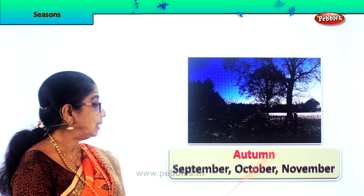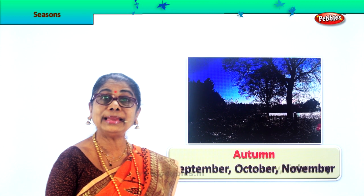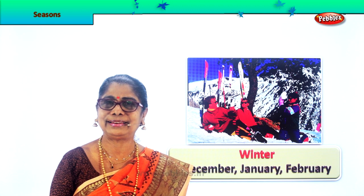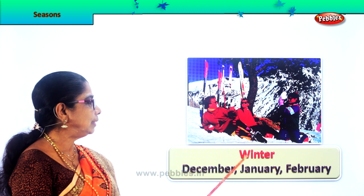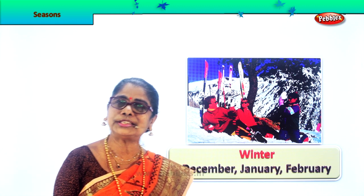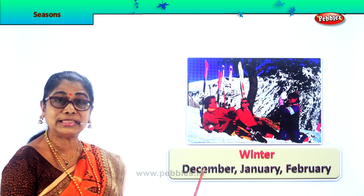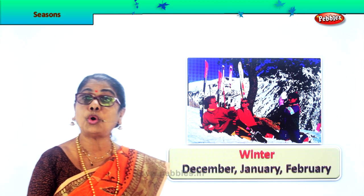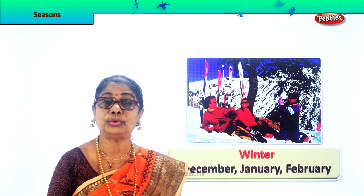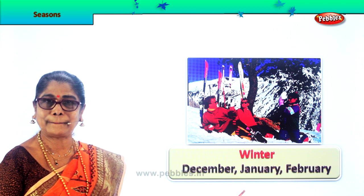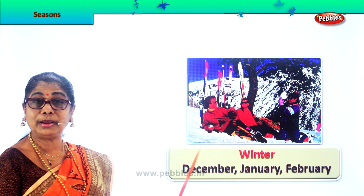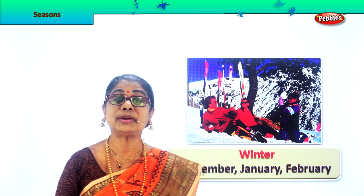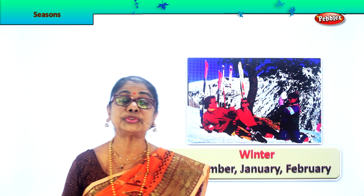After autumn follows another season called winter — the snowy season. People all over love winter because they like to go skating on the snow. Winter is always in the months of December, January, and February. Those are the four main seasons. People love snow — children enjoy making snowmen, throwing snow at each other. They have a lovely time.